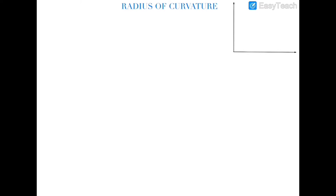In this video you will be getting a very rare concept which is rarely found on the internet: the derivation of the general formula for the radius of curvature. Let's suppose we are given a path which is a function of x — that is, y is a function of x — and this is the path on which a particle is moving.